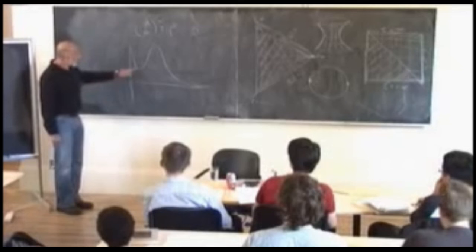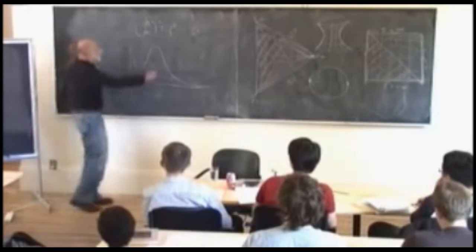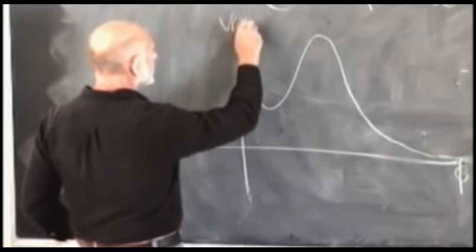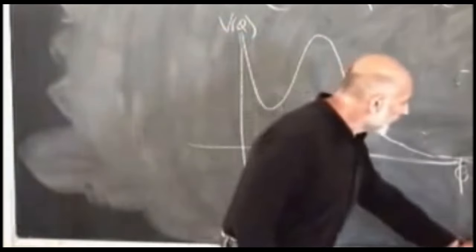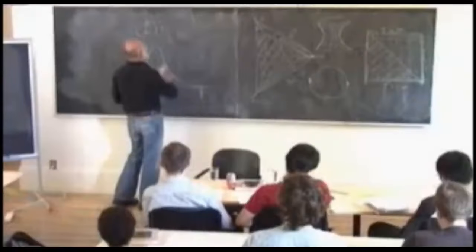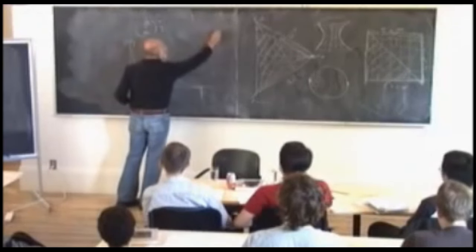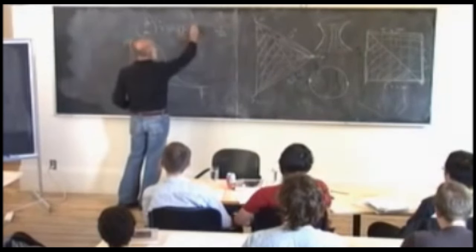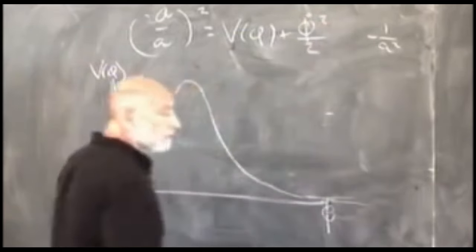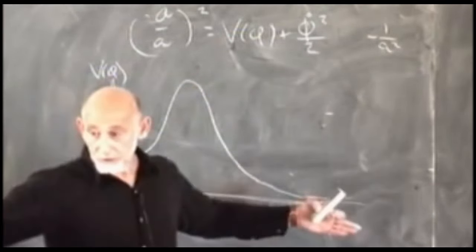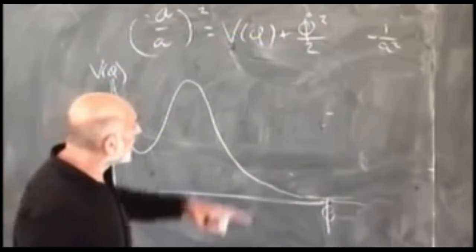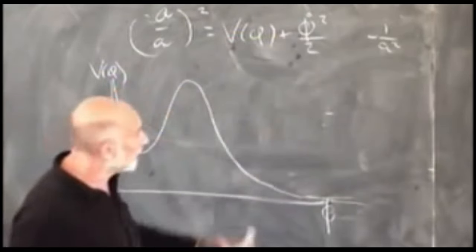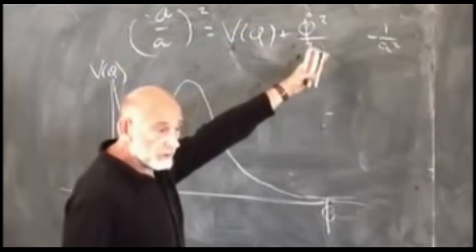I want to imagine that the universe starts with a very high energy density and falls down this potential. What would happen after it hits the bottom? In ordinary mechanics we would overshoot the top because we started with energy higher than the top of the potential. If we roll a ball down a frictionless hill, we would overshoot the minimum and never get stuck at the bottom.